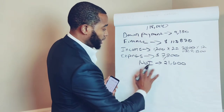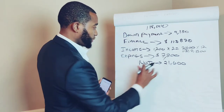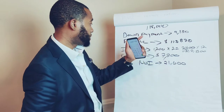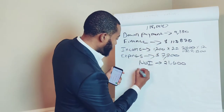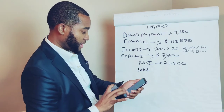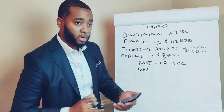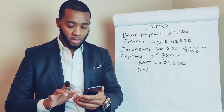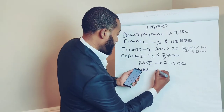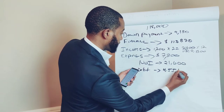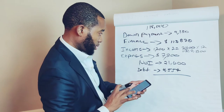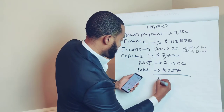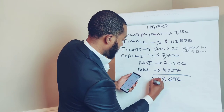So your NOI — remember, income minus expenses — is $28,800 minus $7,200, which puts you at $21,600. That's your net operating income. Now we factor in your debt. You're financing $113,870 at about four percent interest, which comes out to approximately $4,554 per year that you're paying back to the bank. So: $21,600 minus $4,554.